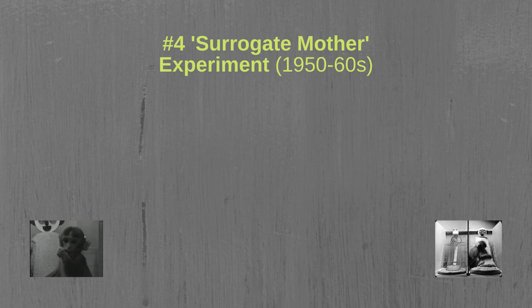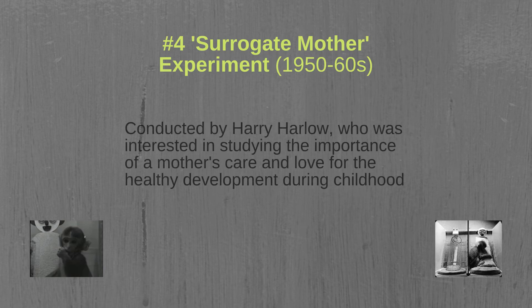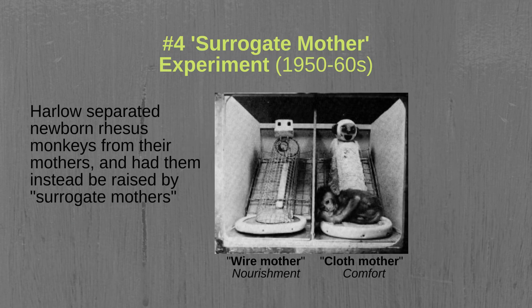The fourth experiment that we will cover is known as the surrogate mother experiment. This experiment started in the late 1950s and continued into the early 1960s. The experiment was conducted by Harry Harlow, who was interested in studying the importance of a mother's care and love for healthy development during childhood. In the experiment, Harlow separated newborn rhesus monkeys from their mothers and had them instead be raised by two surrogate mothers. One surrogate mother was made of soft cloth suitable for comfort, and the other was made of wires with an attached bottle for food.